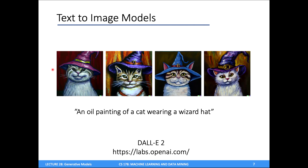Beyond unconditional image generation, you can do conditional image generation, where you give the model some kind of context or side information. Text-to-image models take a string of text as a caption and generate an image matching that caption. There's a model called DALL-E 2 from OpenAI — I typed in the prompt 'an oil painting of a cat wearing a wizard hat' and it generated these images. It's amazing that I can train a model to do this for me.